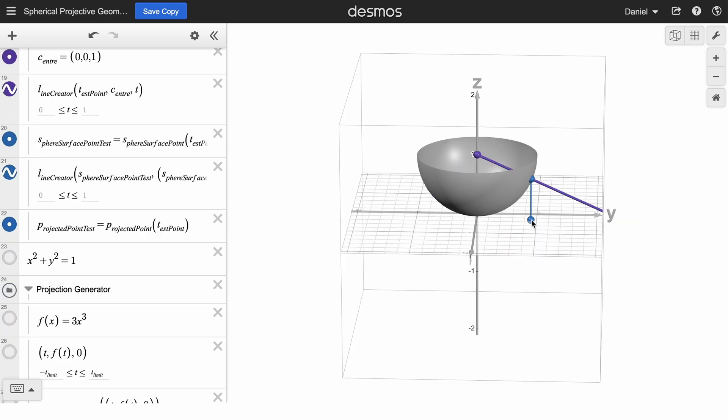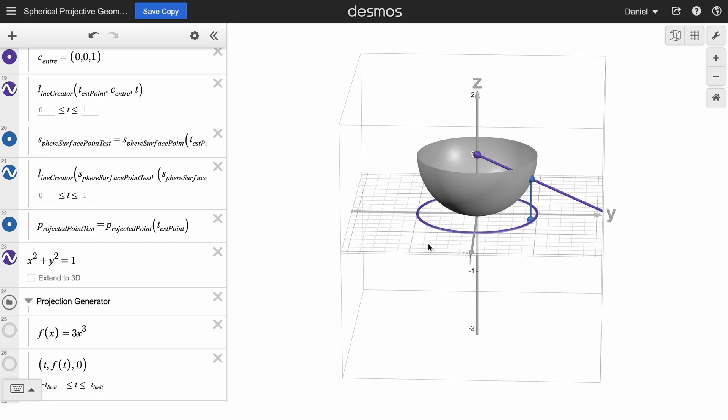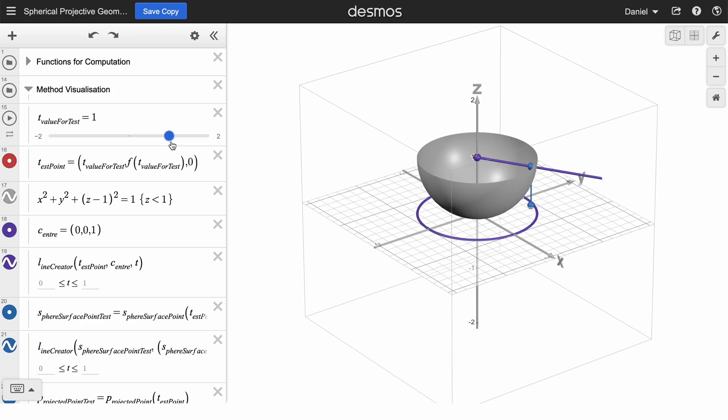And notice that because this blue point on the xy plane is always directly below a point on this hemisphere of radius 1, that means this blue point down here will always be within the unit circle on the xy plane. And this is the method I'm using to define the function that takes any point in the xy plane and gives an output that's always in the unit circle.